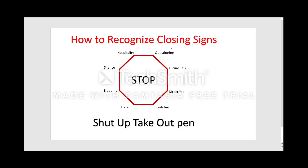Another closing sign is hospitality. You'll see a customer throw out a hospitality sign, meaning they're interested and want to learn more — they want to buy. Maybe they say, 'Let me get my spouse,' or they offer you food or water. That means they're your friend — they're comfortable with you, they're inviting you into their lives, they're ready to be sold. Accept whatever they offer and move on to the next step of the close.